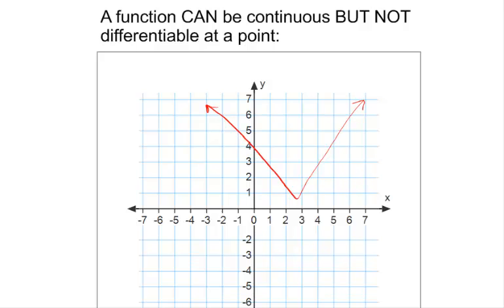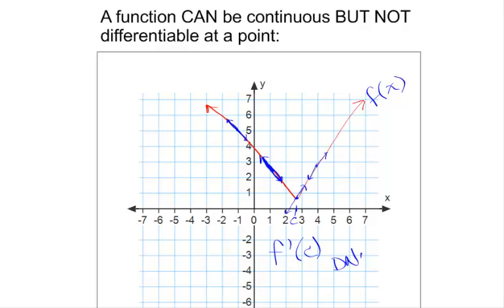Here is a continuous function — I know it's continuous because I drew the whole thing without lifting my pen off the paper. For this function to be differentiable everywhere, I need to be able at any input value to draw a little piece of the tangent line, and very near that point of tangency, that tangent line needs to share outputs with the curve. So far every point I've looked at, this is a true statement. However, for this one — at input values of C — the function is continuous, F of C exists, but it's not differentiable. The derivative does not exist at x equals C.